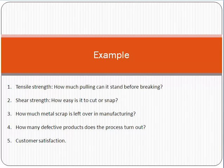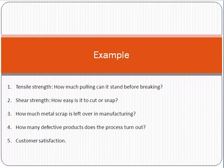Simple examples of quality metrics include: tensile strength — how much pulling can it stand before breaking; shear strength — how easy is it to cut or snap; how much metal scrap is left in manufacturing; how many defective products the process turns out; and customer satisfaction. Think of quality metrics as a scorecard — based on it, you can understand how satisfied customers are and how many defects exist. It gives you a result at the end of a process to score your product.